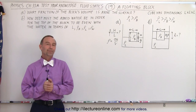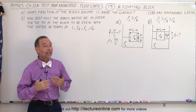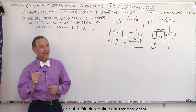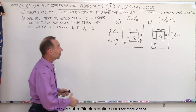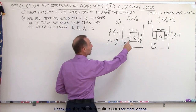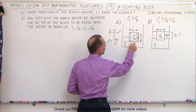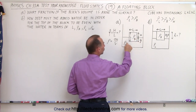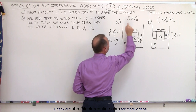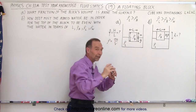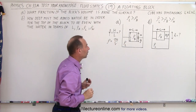Welcome to our lecture online. Our next example is quite interesting and somewhat challenging. Here we have a block of a particular density that's floating in a liquid that has a greater density. Notice the density of the liquid is greater than the density of the block, so that portion of the block is above the liquid.